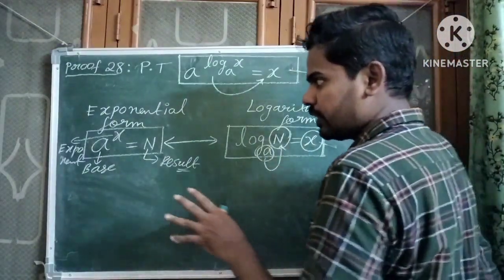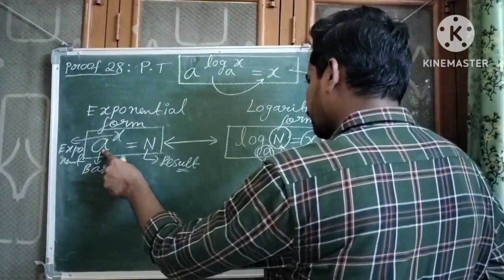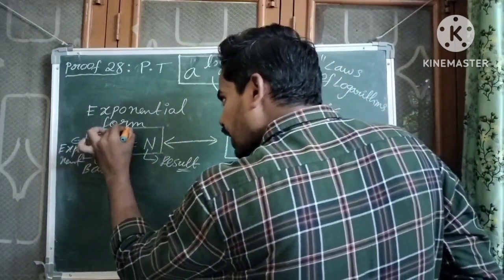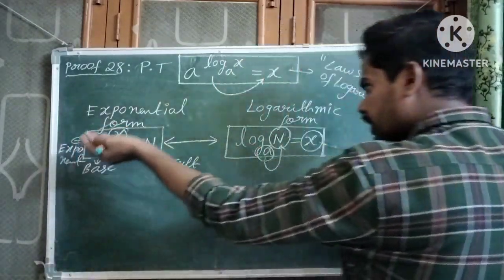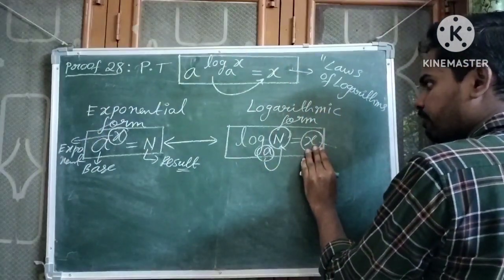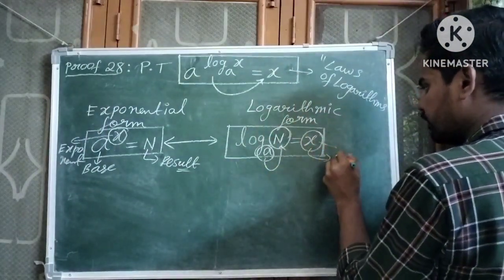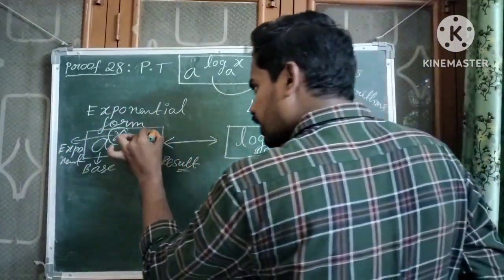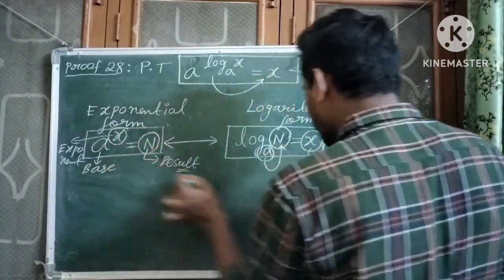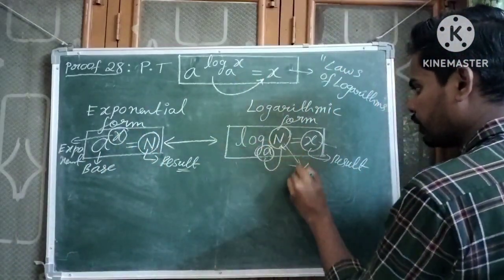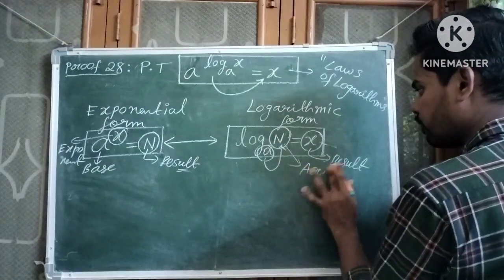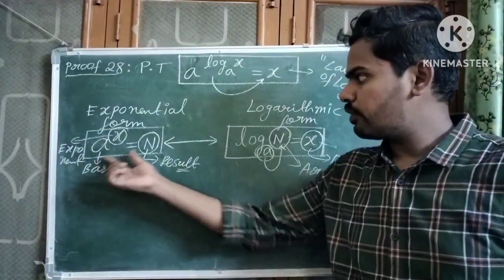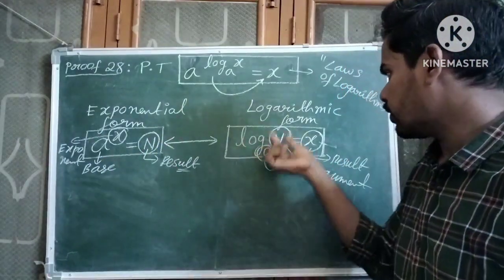Both forms are closely related. The base of exponential form is the same as the base of logarithmic form. The exponent of exponential form is the result of logarithmic form, and the result of exponential form is the argument of logarithmic form. So if a power x equals n, then log n to the base a equals x.